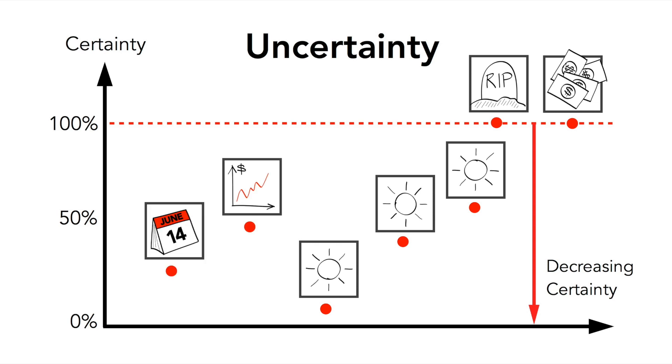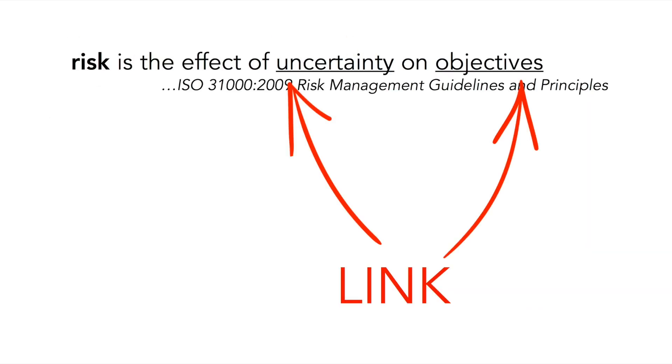I think we're getting a bit closer to understanding what is meant by 'risk is the effect of uncertainty on objectives.' But now I want to link the two together: objectives and uncertainty.